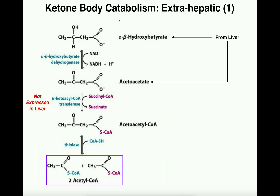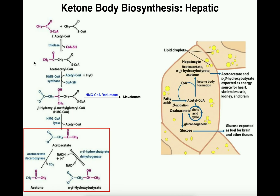We're going to look at those pathways in the next video. Notice that the pathways for ketone body metabolism are all extra-hepatic — meaning this is not done in the liver. The liver does not utilize ketone bodies, and we'll talk about the very important reason why. The liver only manufactures the ketone bodies; it only performs the biosynthesis.